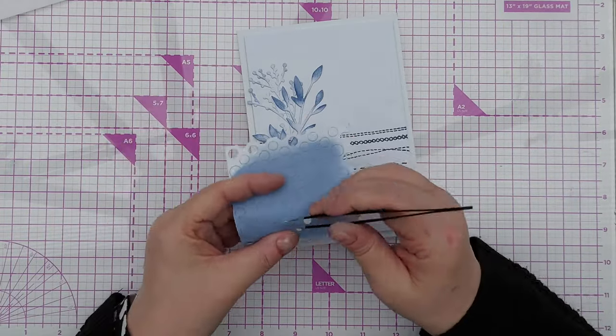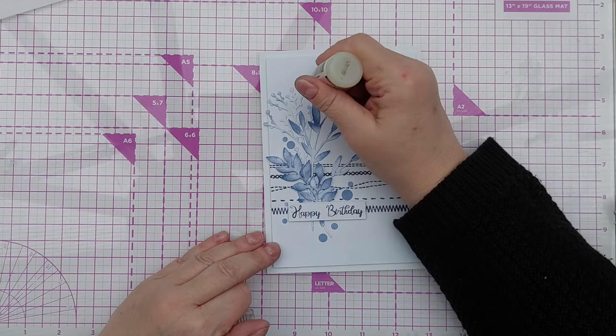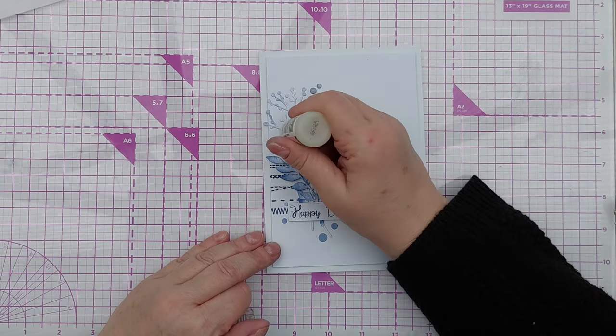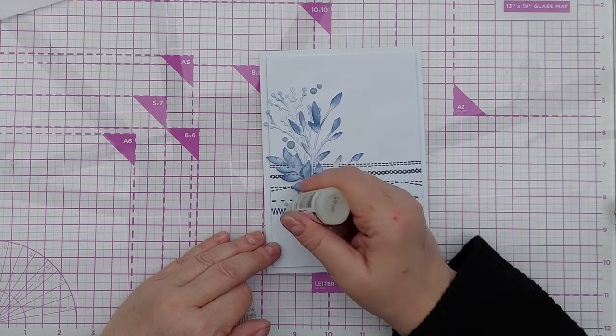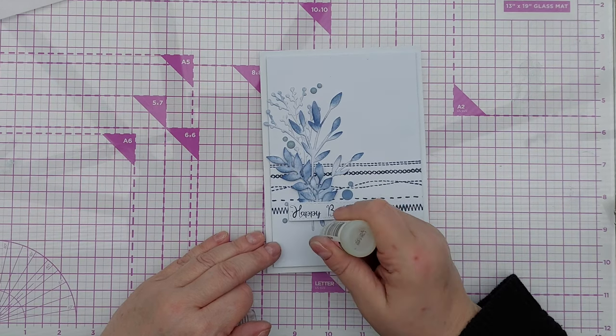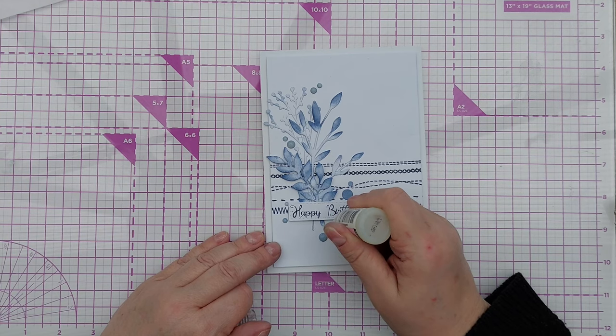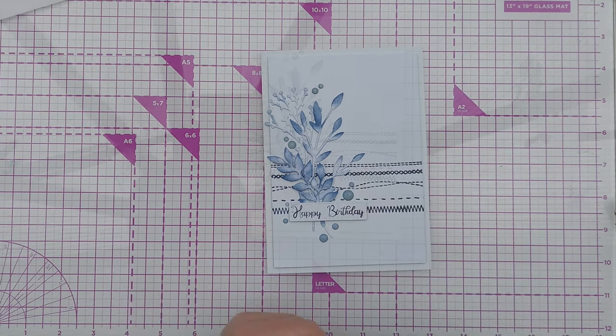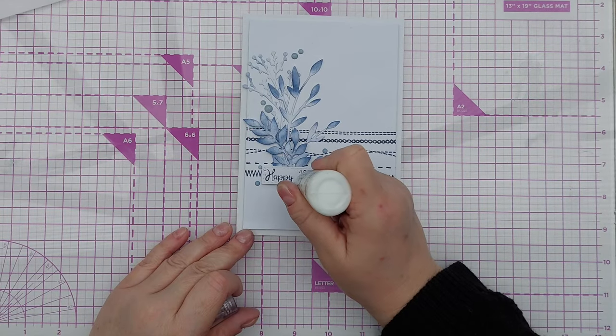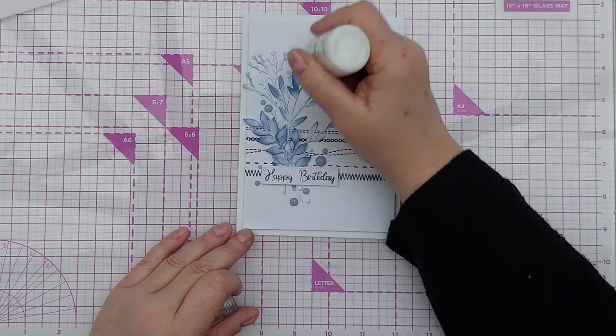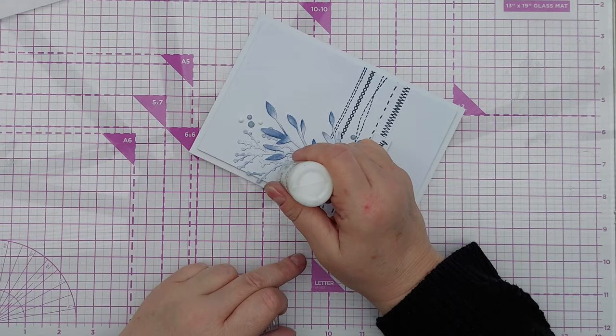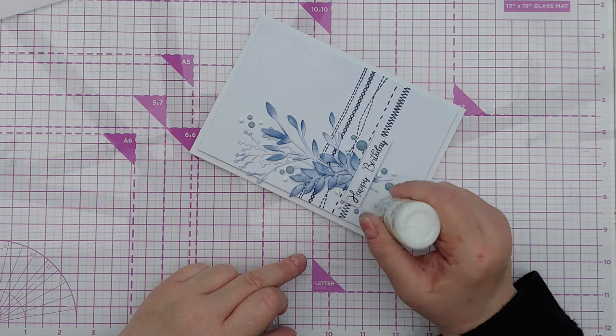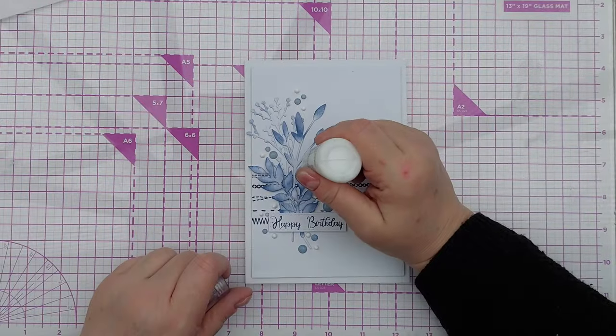To make them look like enamel dots I went over each one of them with some glossy accents which will dry clear so they'll be their true color and tie in well with the rest of the blues, the rest of the indigos on the card. And then I felt it just needed something a little bit more so I brought in some white nouveau drops and they just bring in a little extra gloss and dimension.